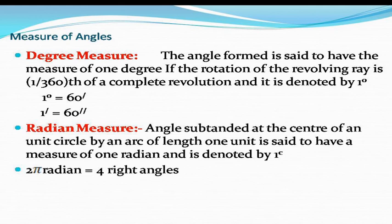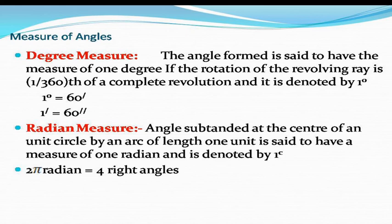Our next subtopic is the measure of an angle. We have three measurements of an angle: degree measure, grade measure, and radian measure. In our course, we discuss only degree measure and radian measure. In degree measure, an angle is said to have a measure of one degree if the rotation of the revolving ray is 1/360th of a complete revolution. A complete revolution is 360 degrees, so one part of 360 is 1 degree, denoted by 1°.